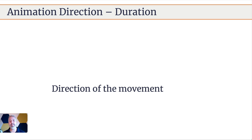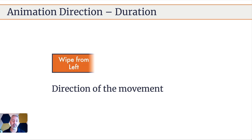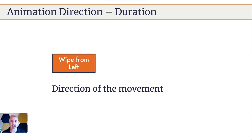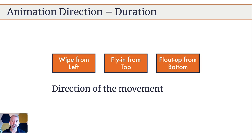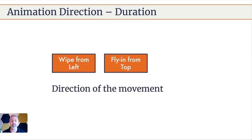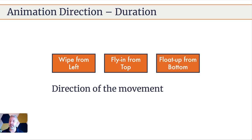What we're really talking about is the direction of the movement. The options are: wipe from left, fly in from top, and float up from bottom. Going through those one more time: wipe from left, fly in from bottom, and float up from top. So these are the animation effect options.